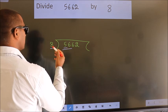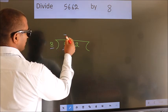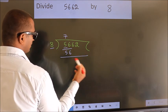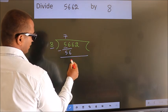When do we get 56 in the 8 table? 8 times 7 is 56. Now we should subtract. We get 0.